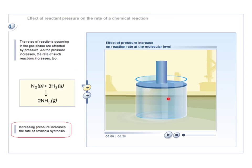It won't make the particles move any faster, but it will force them close together, and that will make them more likely to collide with each other in a given time. Therefore the collision frequency increases, so the rate of reaction increases.